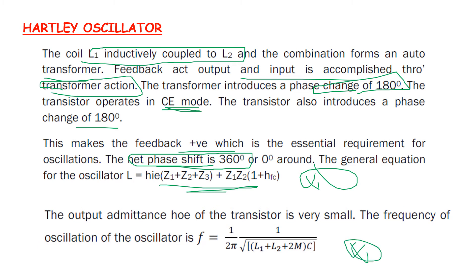The output admittance of the transistor is very small. The frequency of oscillations of the oscillator is f = 1 / (2π√((L1 + L2 + 2M) × C)). This is the frequency formula.